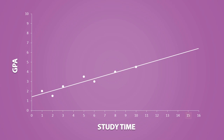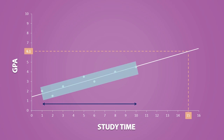If someone studies for 15 hours a week, then we predict their GPA to be about 6.1. There is clearly a problem here. At school, the highest GPA you can get is a 4.5, and anything higher than 4.5 is impossible. This is why we should not extrapolate outside the range of data, because we do not know if the relationship continues to exist outside the range of data.